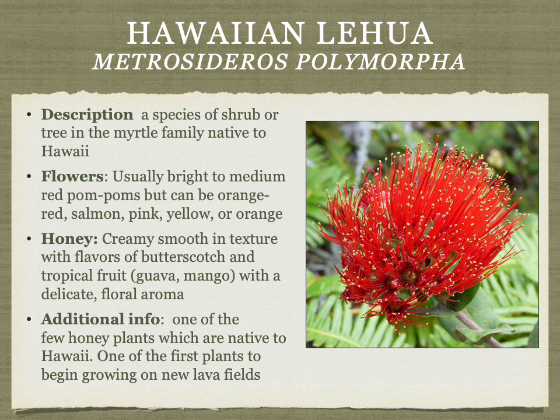Hawaiian lehua is probably among the top ten favorite honey varietals. The plant has bright red pompom flowers and other colorful varieties. The honey is creamy and smooth in texture with flavors of butterscotch and tropical fruit and a delicate floral aroma. It's one of the few honey plants in Hawaii that is actually native to Hawaii.